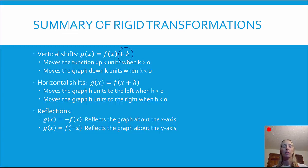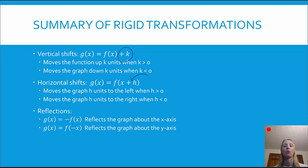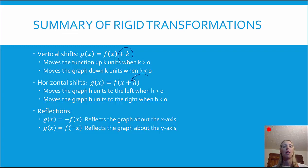Next we have horizontal shifts. That's where there's something happening within the function — inside the parentheses. It moves the graph to the left when h is positive, and to the right when h is negative. So it seems counterintuitive. With the vertical it makes sense: positive goes up, negative goes down. With horizontal shifts it's the opposite — it has to work harder when it's positive so it moves the graph to the left. And lastly we have reflections. If we see a negative in front of the entire function, that's going to reflect the graph about the x-axis. And if we have a negative within the function, that's going to reflect the graph about the y-axis.